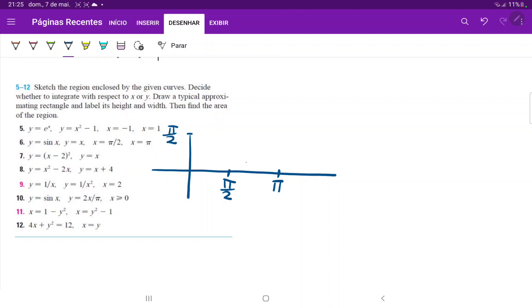So for our first curve we have, and then we'll draw it over here, we have this one which is x equals pi over 2. And for our second one we have this line which is just x equals pi.